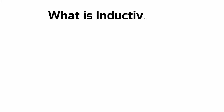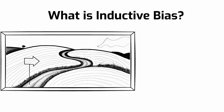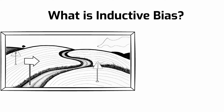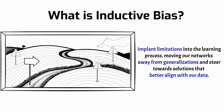So what is inductive bias? Think of it as a guiding light for our deep learning models where we deliberately implant specific rules and limitations into the learning process, moving our neural networks away from generalization and steering them more towards practical solutions that better align with our data's domain. It is actually pretty simple, so let me explain it with an example.